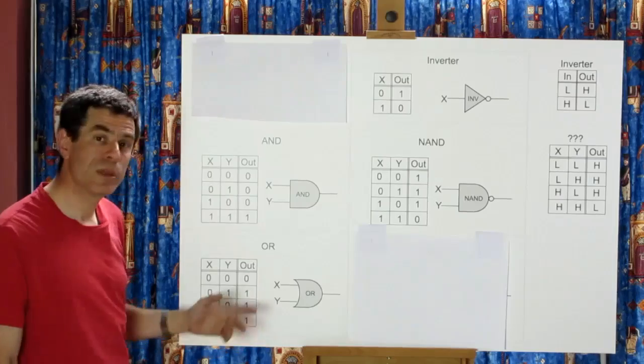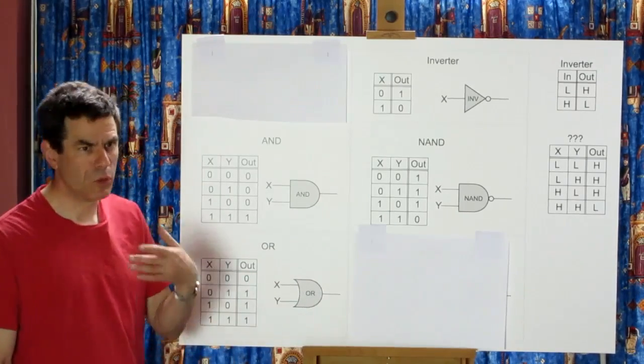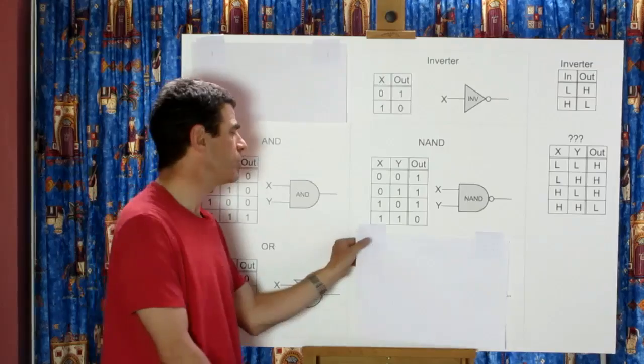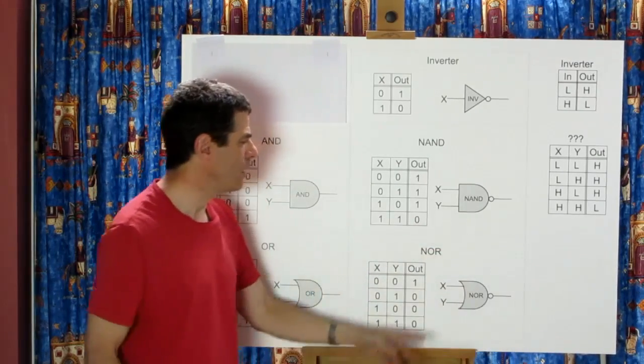And we can do a similar thing with the OR which will give us the NOT OR normally abbreviated to the NOR function and that looks like this.